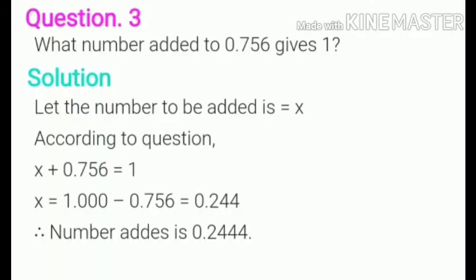Next question number three. What number added to 0.756 gives 1? So here 1 is the greater number and 0.756 is the smaller number. So we have to subtract 0.756 from 1. It gives the number as 0.2444.